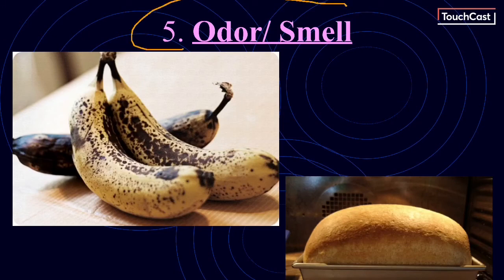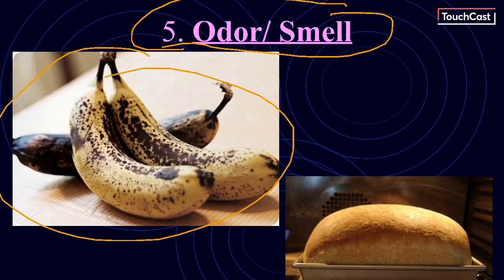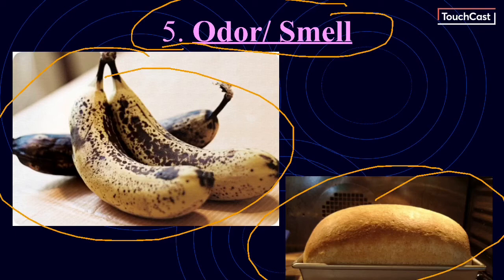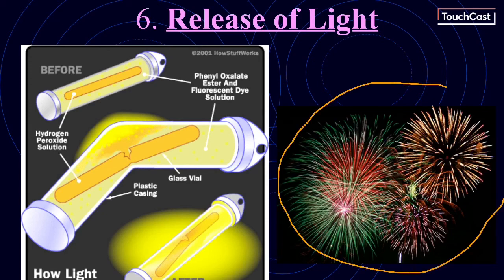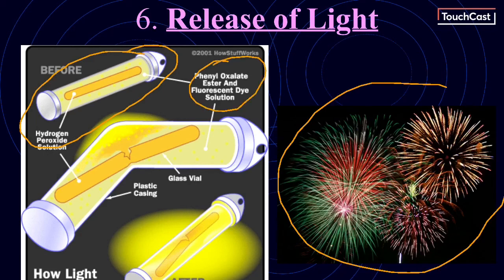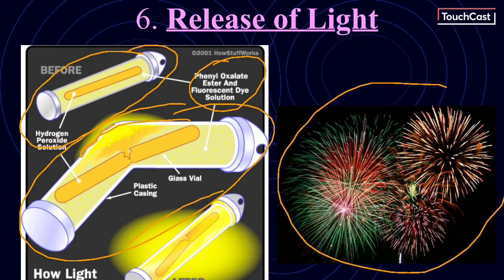The fifth one is going to be an odor or smell. If it gives off some type of odor, you know that a change has occurred — like these rotten bananas or this delicious-looking baked bread. Those are odors given off that indicate a change. Your last example is going to be a release of light. If you look here, you've got fireworks. This shows you the breakdown of a glow stick — on the inside there's a small piece of glass with a hydrogen peroxide solution, and the outside has a fluorescent dye. Once you break the plastic part, you've got a release of light. That is your chemical reaction for that.